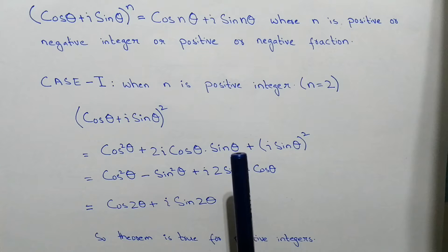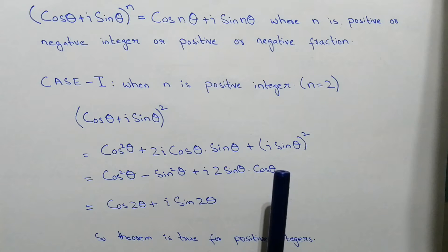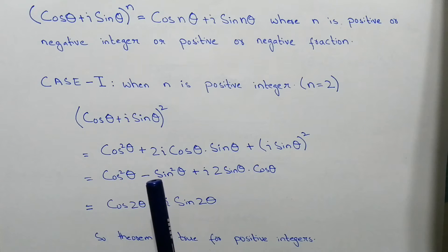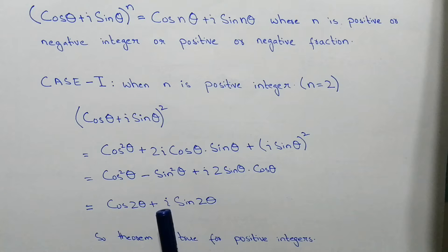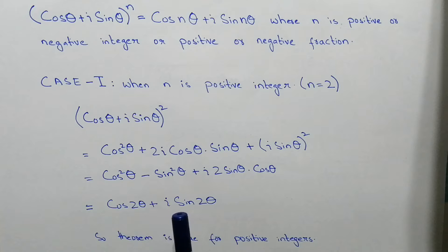So it will be cos²θ − sin²θ + i·2 sin θ cos θ. We know that cos²θ − sin²θ equals cos 2θ, and 2 sin θ cos θ equals sin 2θ. So we get cos 2θ + i sin 2θ, and we can say that the theorem is true for positive integers.